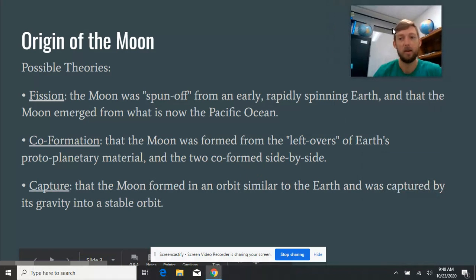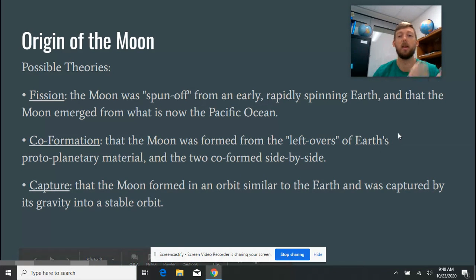There's also the capture theory, which is that the Earth formed, and then somewhere else in the universe, the moon formed in the same way. So all this matter that's floating around from the explosion has formed with gravity into a celestial body. But it's moving in a direction and it just got caught in our orbit. So it just moved close enough to us that it got caught in our orbit and started orbiting the Earth.